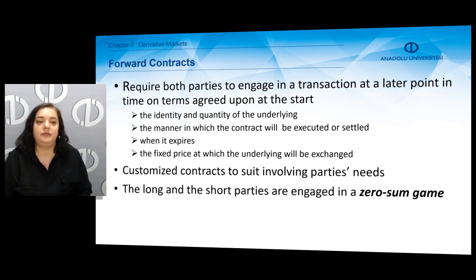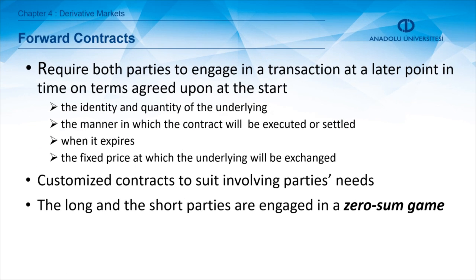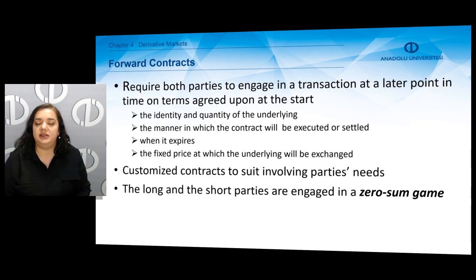Forward contracts require both the long party and the short party to engage in a transaction at a later point in time. The transaction happens in the future on the terms agreed upon at the start. The terms agreed upon include the identity and quantity of the underlying asset, the manner in which the contract will be executed, when it will expire, and the fixed price at which the underlying will be exchanged. Forward contracts are customized contracts to suit the involving parties' needs.